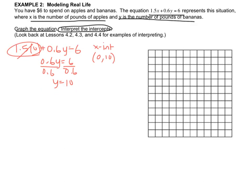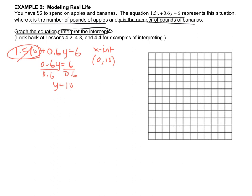Let's do the other intercept. Now I'm gonna plug in 0 for y. Oh sorry, this is the y-intercept. I wrote x. Shame on me. Okay, so now I'm doing the x-intercept. So 1.5x plus 0.6 times 0 equals 6. This cancels out and I have 1.5x equals 6. Divide by 1.5 and I get x equals 4. So the x-intercept is 4, 0.